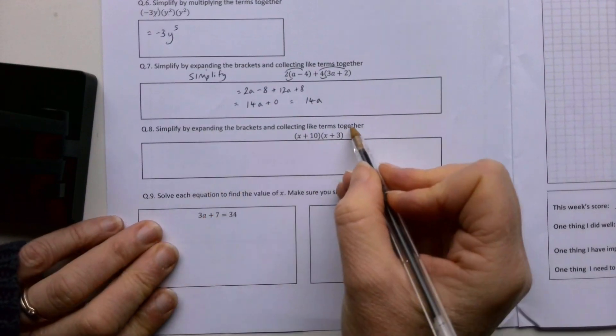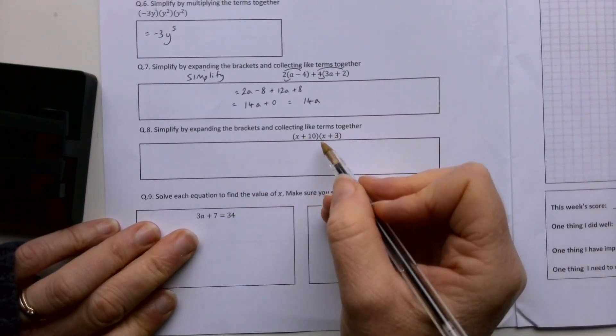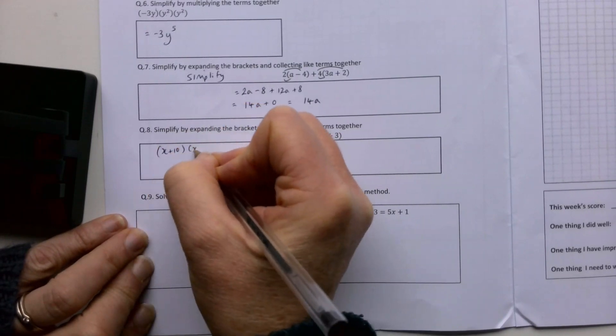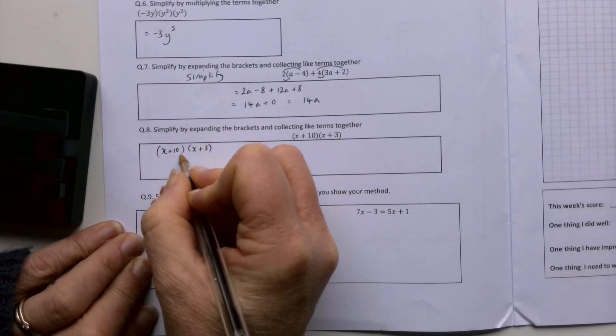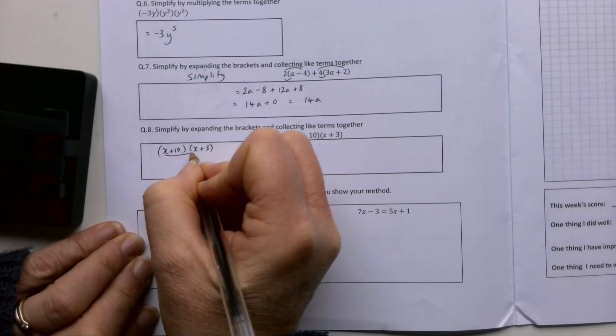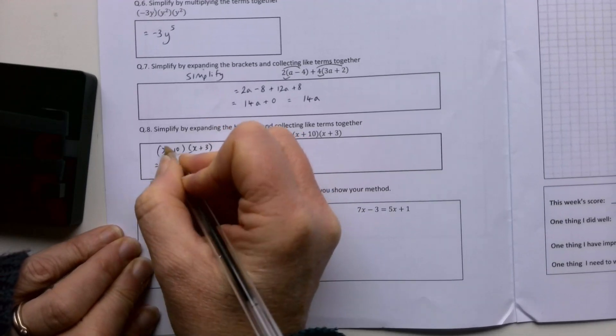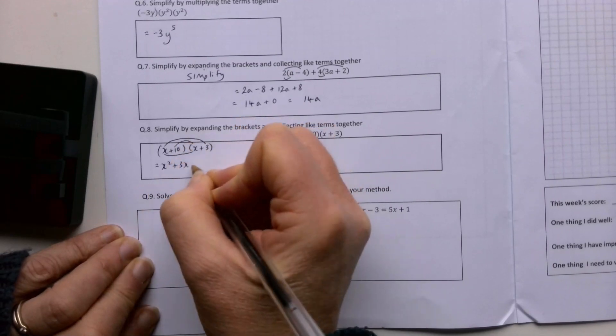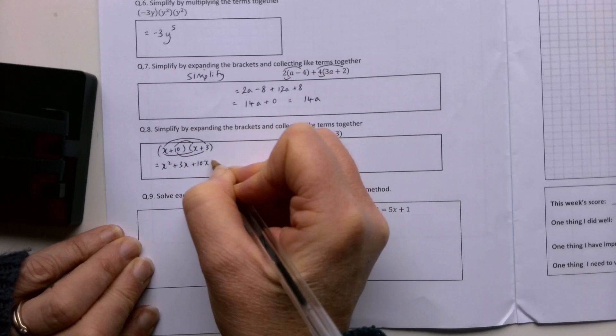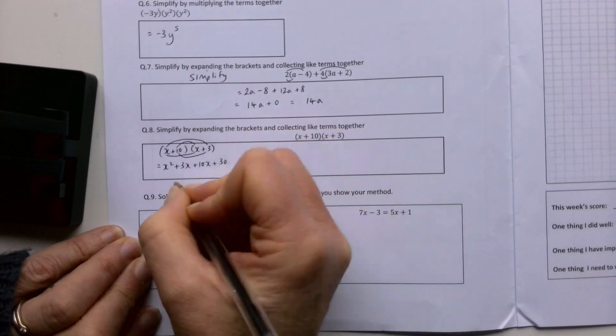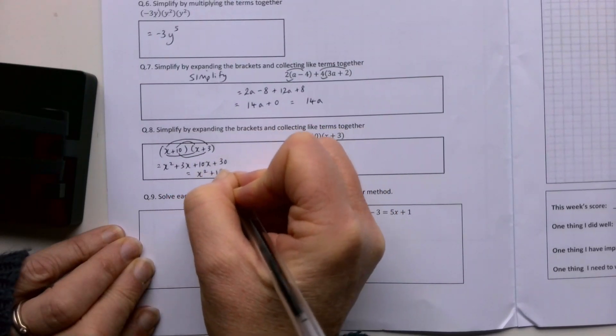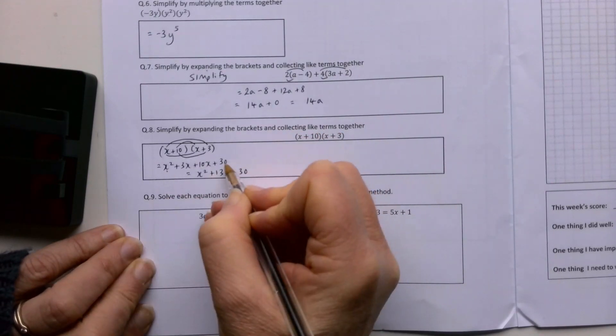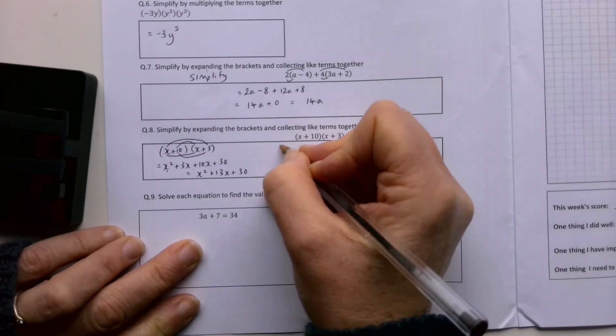Simplify by expanding the brackets and collecting the like terms together. Remember there's a couple of different ways you can do this. You can do it by just tracing - everything in this has to multiply by everything in this. So the x has to multiply by the x, which is x squared. The x has to multiply by the 3, which is 3x. The 10 has to multiply by the x, which is 10x. And the 10 has to multiply by the 3, which is 30. So I get x squared plus 13x plus 30.